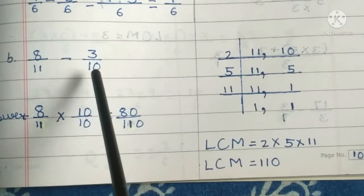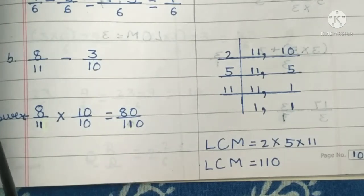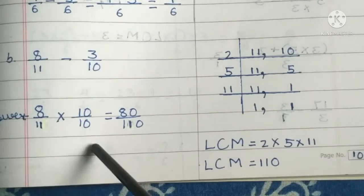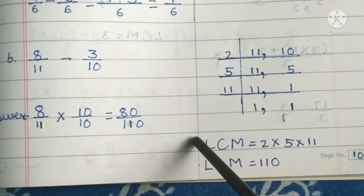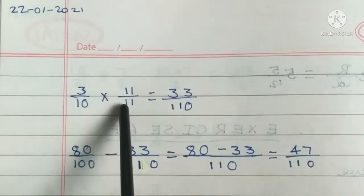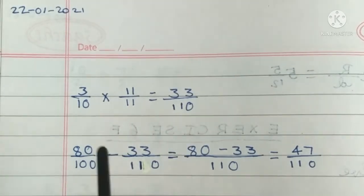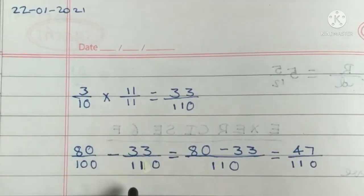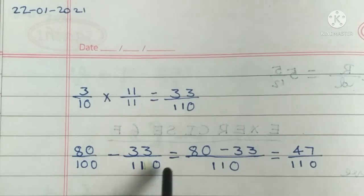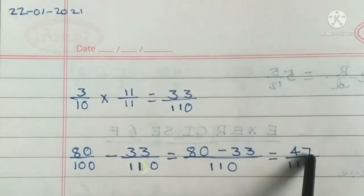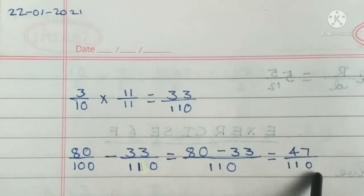Second one: 8/11 minus 3/10. Answer: Finding the LCM of the denominators, LCM is 110. 8/11 multiplied by 10/10 is equal to 80/110. 3/10 multiplied by 11/11 is equal to 33/110. Therefore, 80/110 minus 33/110 is equal to 47/110.